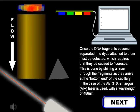Once the DNA fragments become separated, the dyes attached to them must be detected, which requires that they be caused to fluoresce. This is done by shining a laser through the fragments as they arrive at the bottom end of the capillary. In the case of the ABI 310, an argon AR-plus laser is used with a wavelength of 488 nanometers.